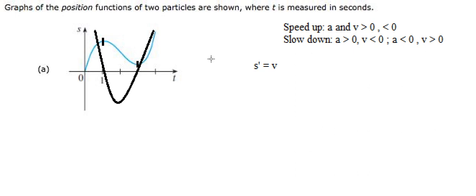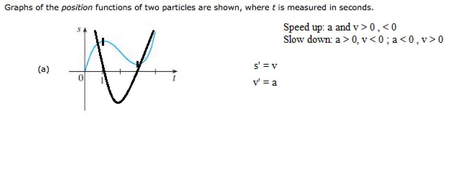So we can draw the graph of the acceleration function here. The acceleration function is the first derivative of the velocity function. Here they are going down, so it means the acceleration should go this way. Because we have the critical points here, they go up, so it means A should be positive and go this way.